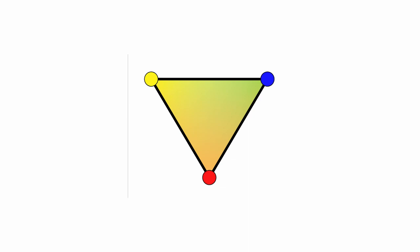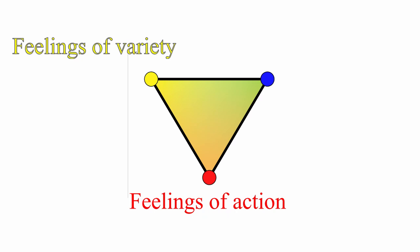The yellow feelings would be feelings that correspond to the category of firstness. We can call them feelings of variety. The more reddish yellow feelings would be feelings that correspond to the category of secondness, feelings of action. And the bluish yellow would be feelings that correspond with thirdness, feelings of pattern. We are now ready to start the categorization.